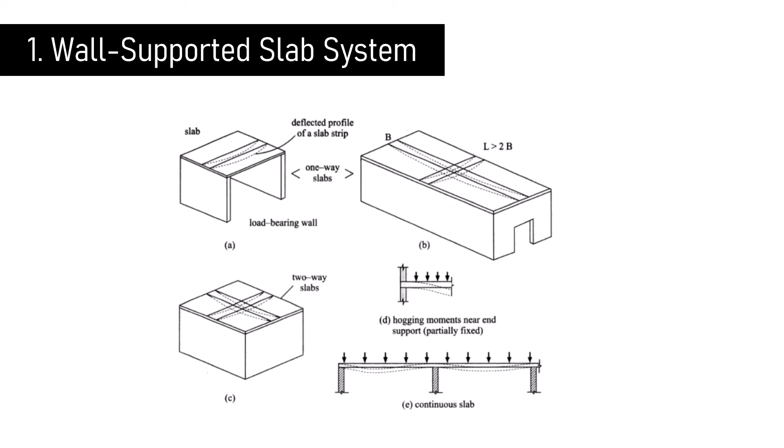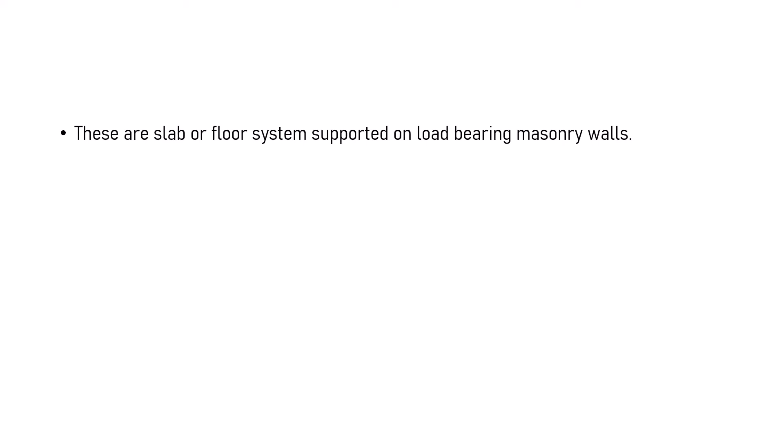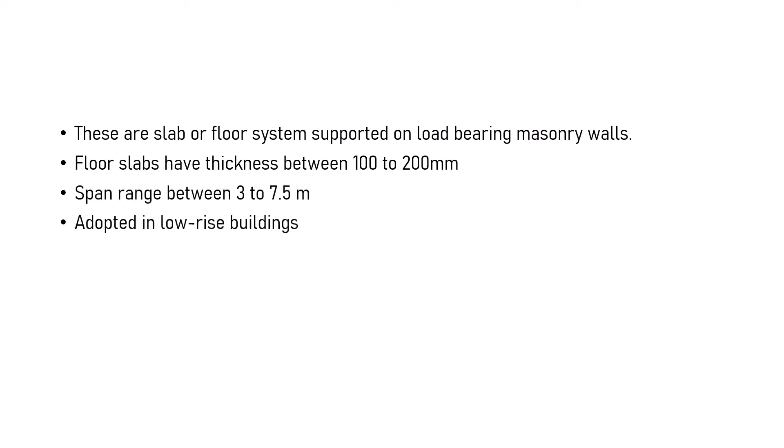There are slab or floor systems supported on load-bearing masonry walls. The important features of such wall systems are: floor slabs have thickness between 100–200 mm; span range between 3–7.5 meters. They are mainly adopted in low-rise buildings and can be supported on opposite spans, called a one-way slab, or supported on all four slab sides, called a two-way slab.